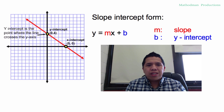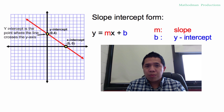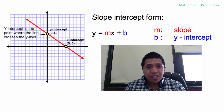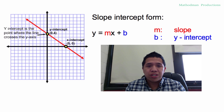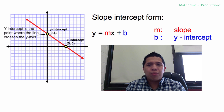I would have chosen something else, but it is what it is. So again, m stands for slope, b is the y-intercept. As long as you have those two, you can write an equation in slope-intercept form.